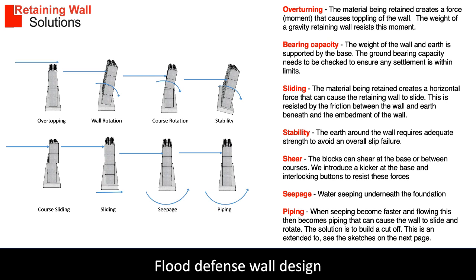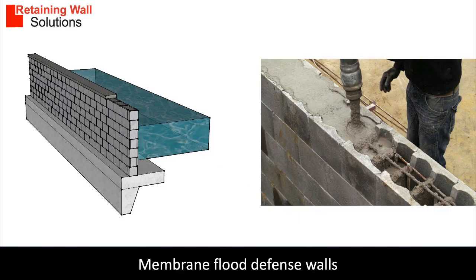Seepage is water slowly getting under the wall to the dry side, and piping is when the flow is faster. The amount of seepage will depend on the soil porosity. Gravel and sand soil will have a high porosity, and clay type soil will have a slow porosity.